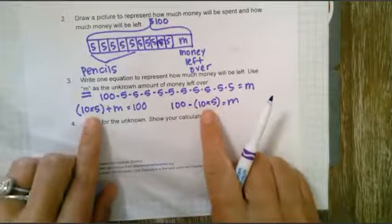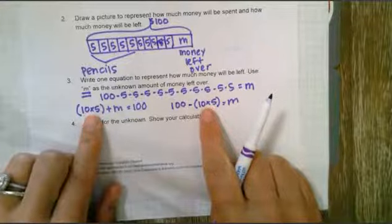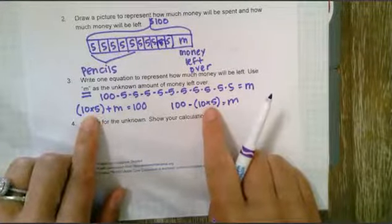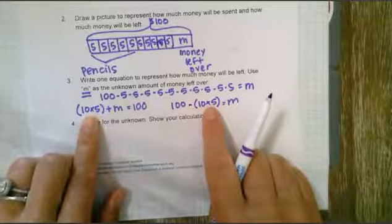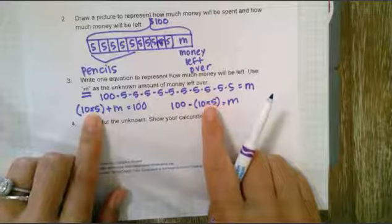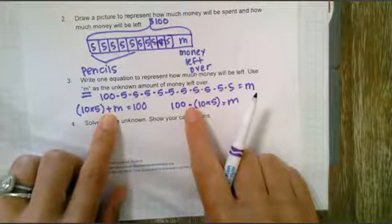It's super important that we use parentheses to organize our work so that we know we want to do this operation first before we do any other operation. So I want to multiply 10 times 5 here and 10 times 5 here before I add m or before I subtract.